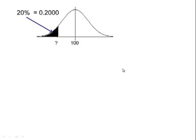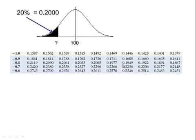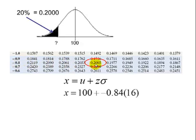Using table 5, we are going to find the closest thing to 0.2000. And if we look in the table, we see the closest is 0.2005. That corresponds to a z of a negative 0.84.